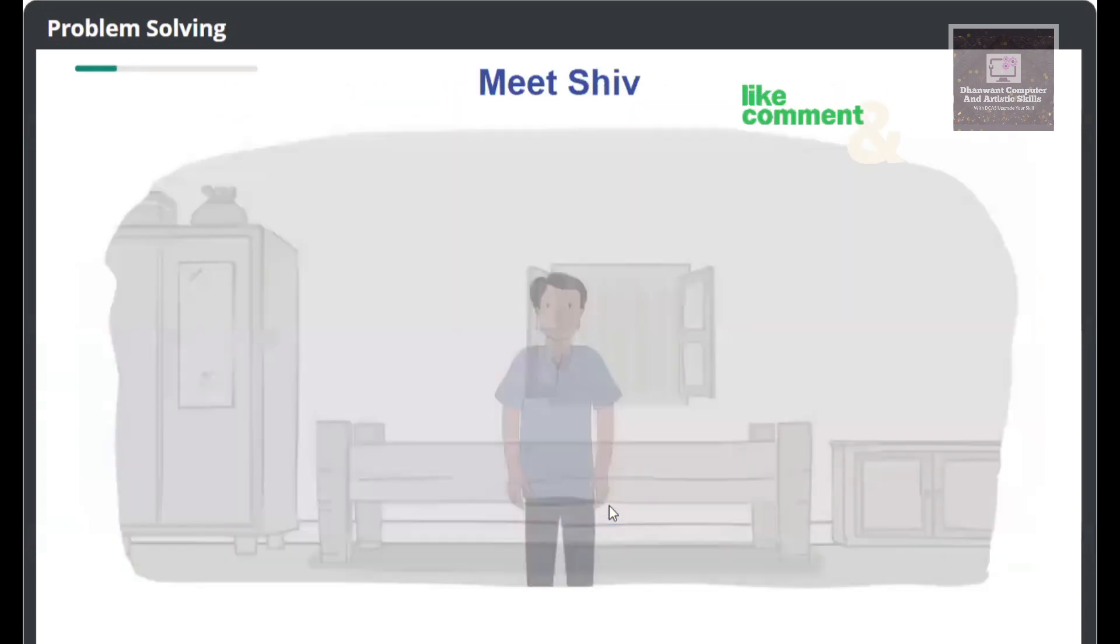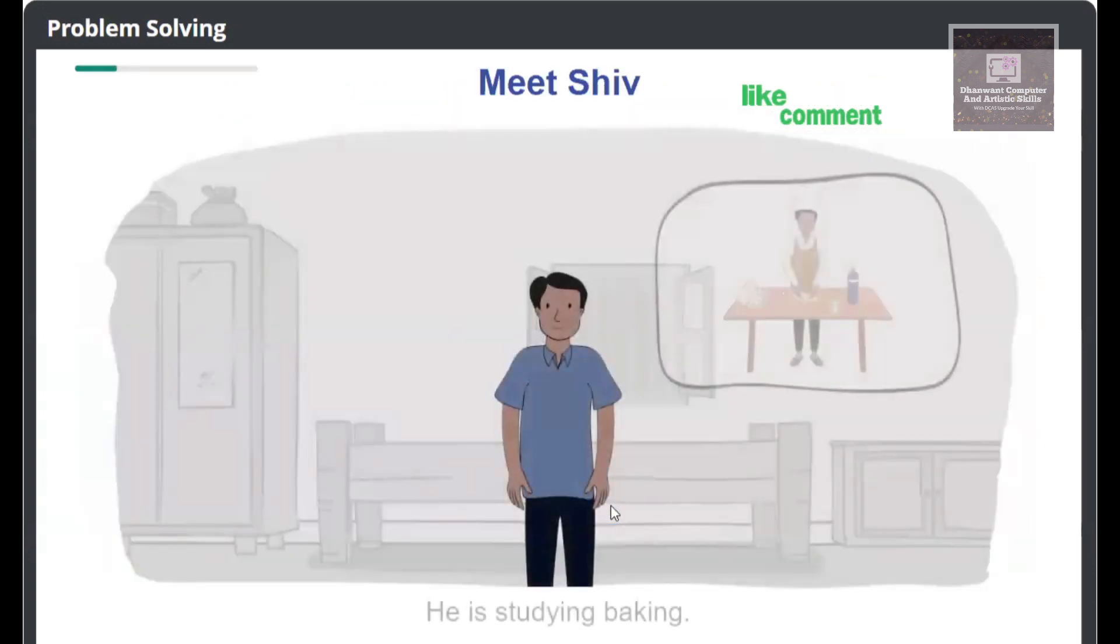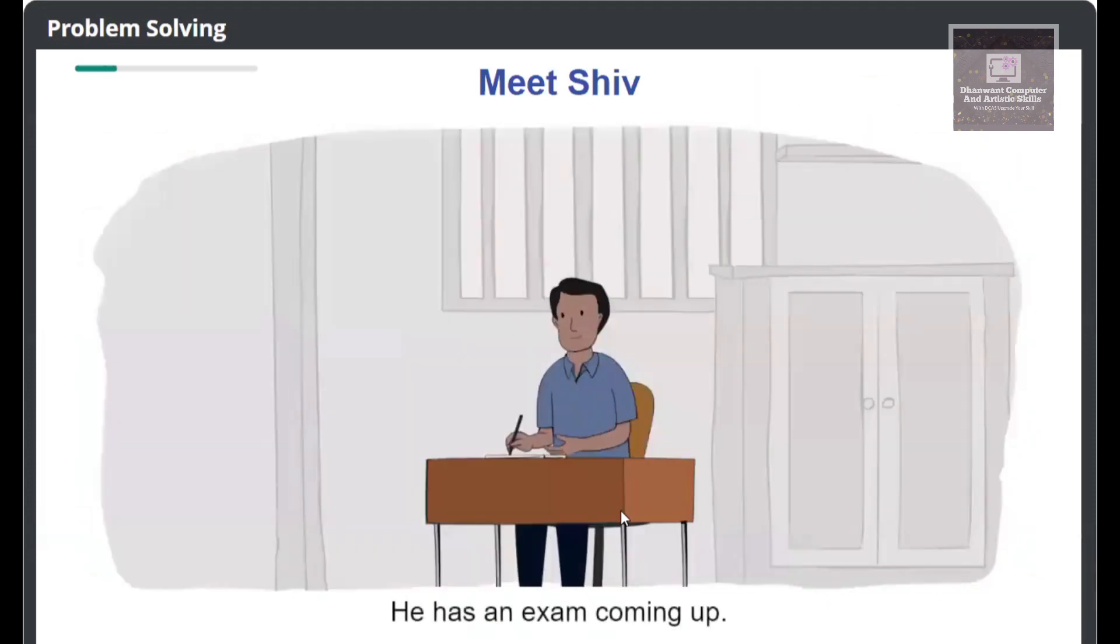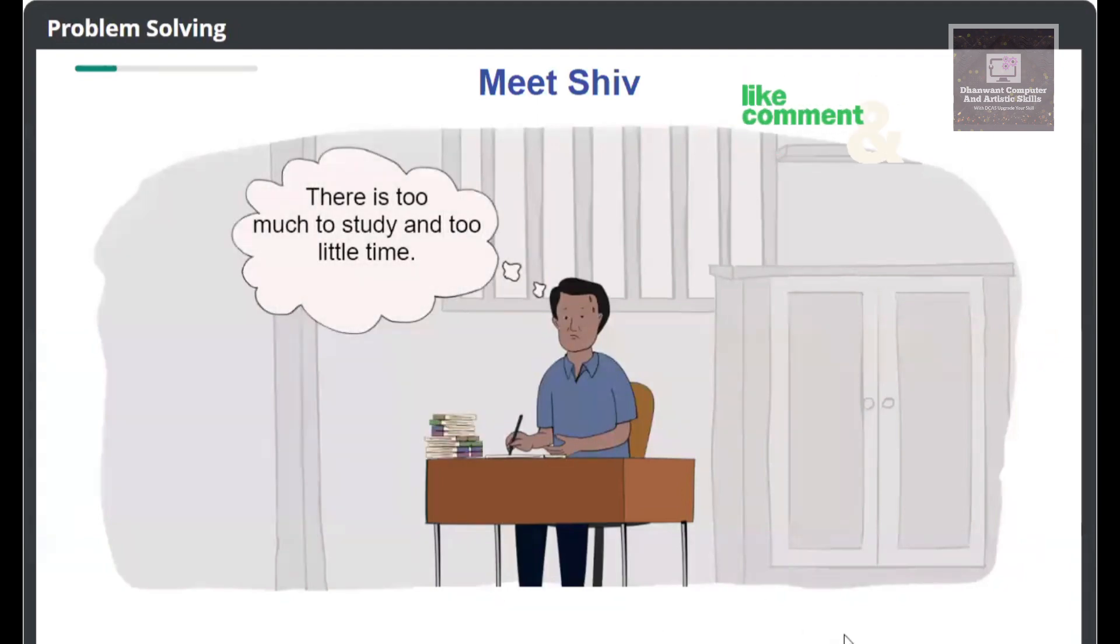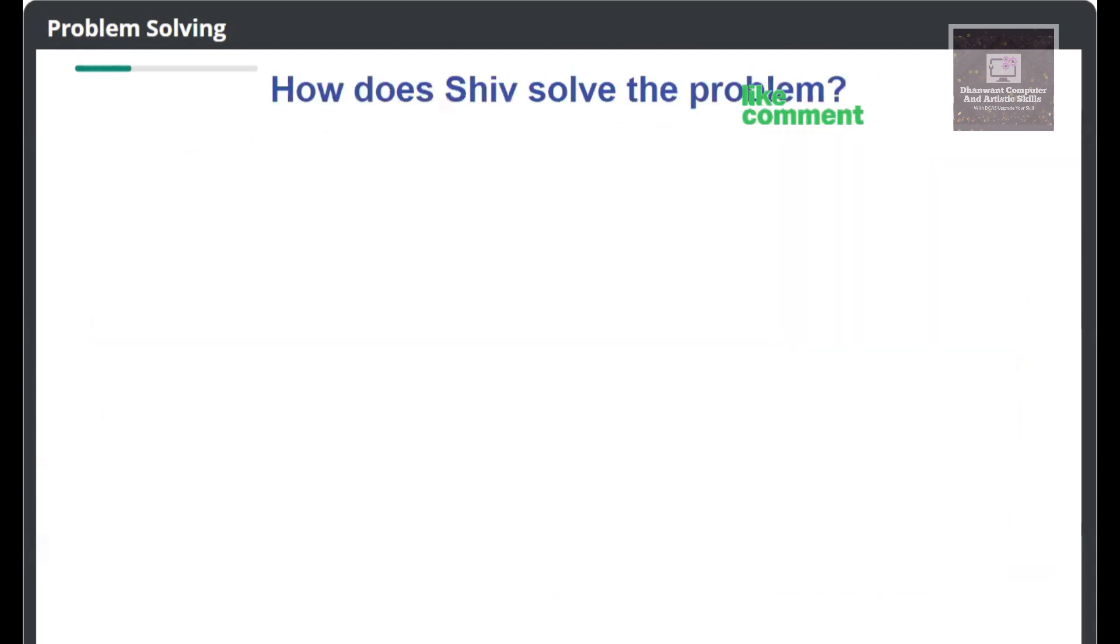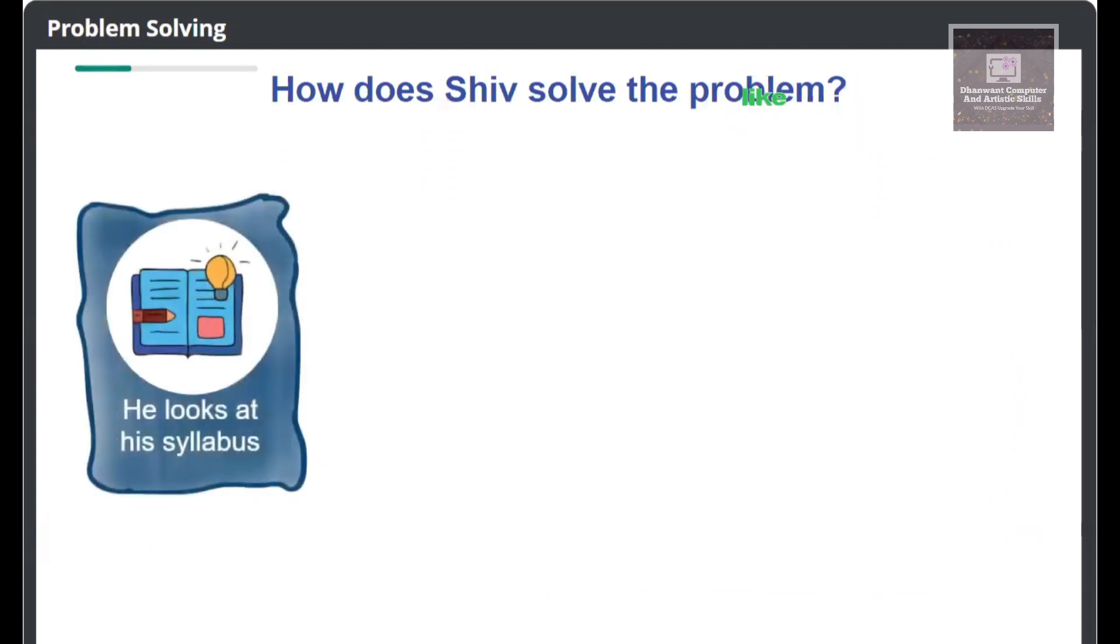Meet Shiv. He is studying baking and has an exam coming up. Shiv has a problem: there is too much to study and too little time. How would he solve it? The first thing Shiv does is to look at his syllabus.